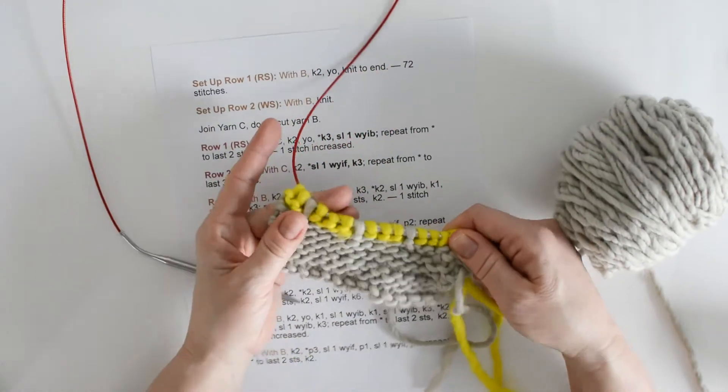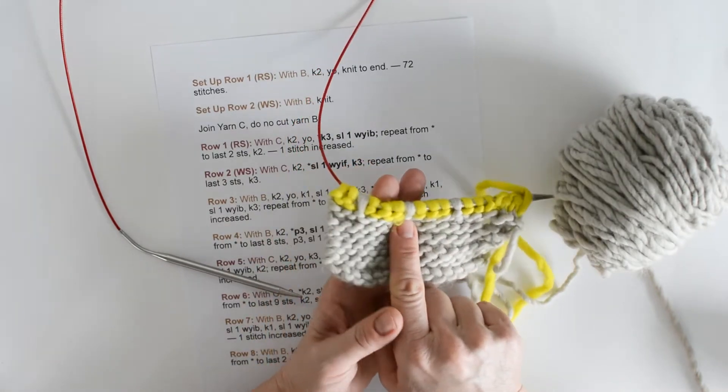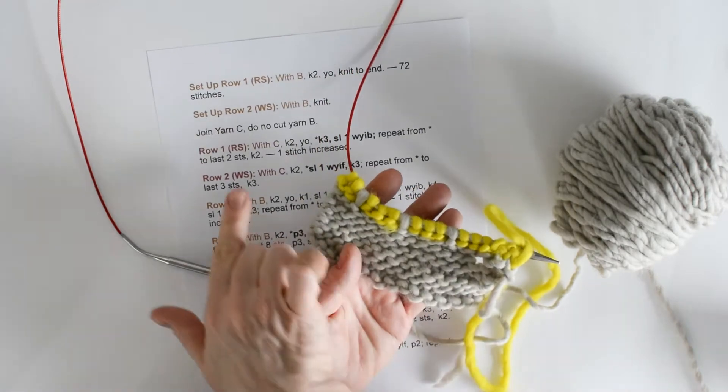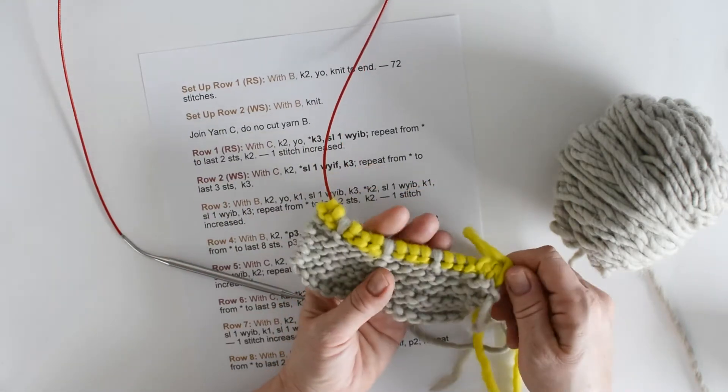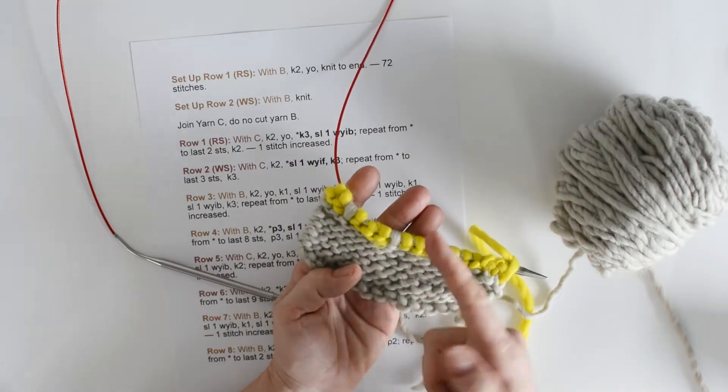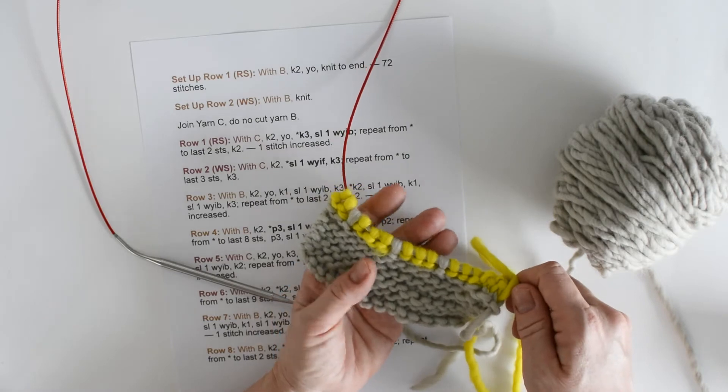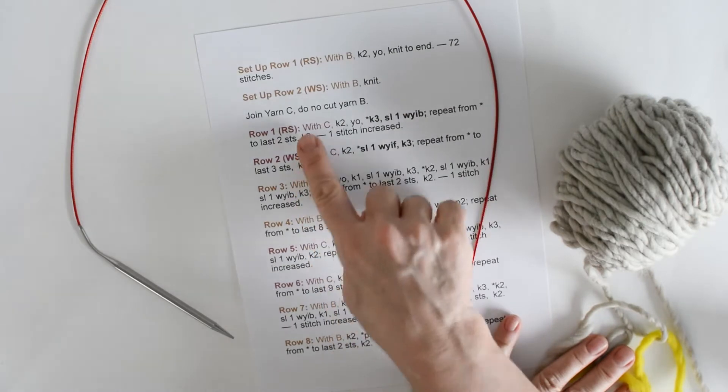So let's take a look at what we just did on those rows. By slipping those stitches, we're bringing the color from our setup rows up into the row that we just worked, rows 1 and 2 that we just worked. And that's what's creating our color work pattern. We're just sort of stealing a stitch from the row 2 rows below in order to do that.